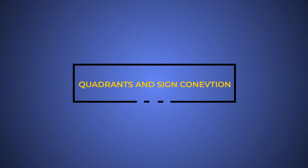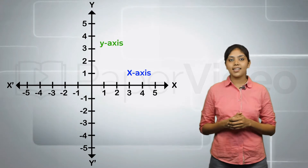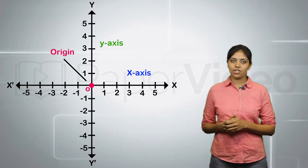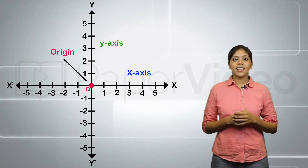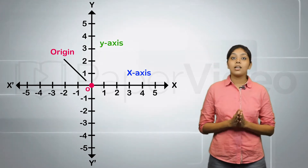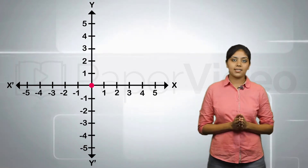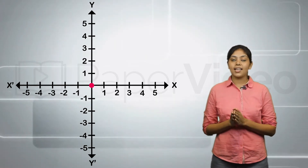Quadrants and Sign Convention. As we know, a Cartesian plane consists of two mutually perpendicular number lines — the x-axis and the y-axis — intersecting each other at the origin. The x-axis and the y-axis together are known as the coordinate axis. The coordinate axis divides a Cartesian plane into four parts, and each part is known as a quadrant.